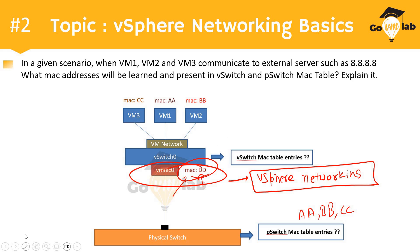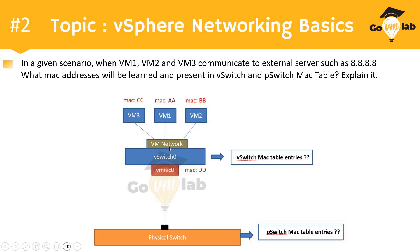This concludes our discussion about what MAC addresses will be learned by your physical switch and virtual switch in the given scenario. As per vSphere networking concepts, there is no point at which vSwitch starts learning MAC addresses, so vSwitch does not maintain any CAM table like a physical switch. The vSwitch is already aware of the MAC addresses of connected VMs, but the physical switch must learn them — only the virtual machine MACs, not the uplink MAC address DD, which has no role in vSphere packet switching and forwarding.